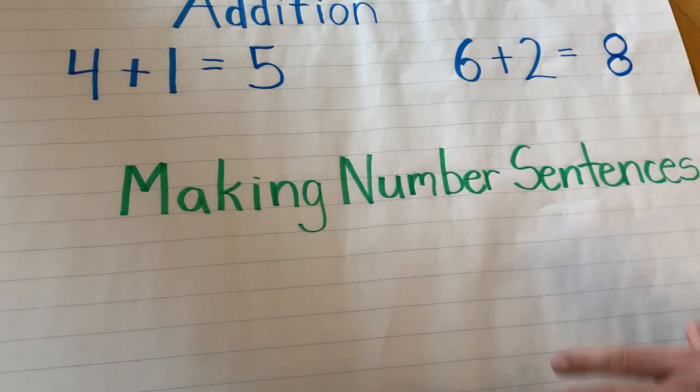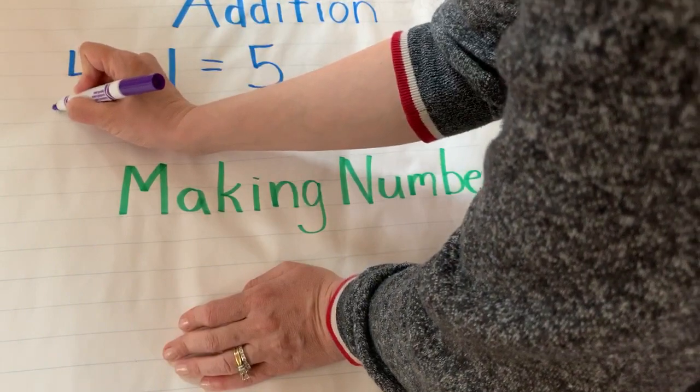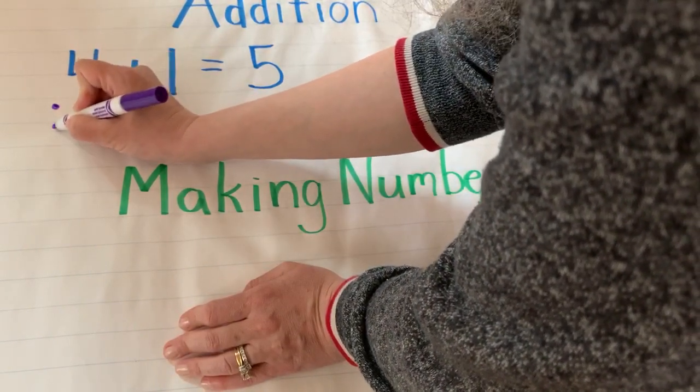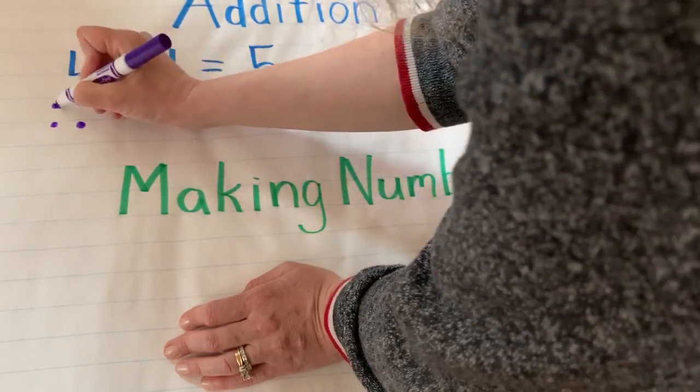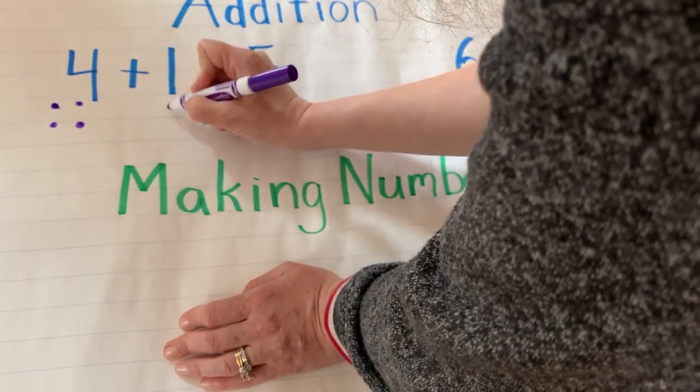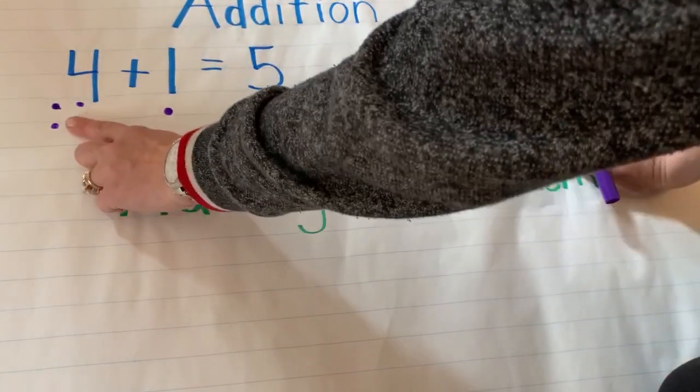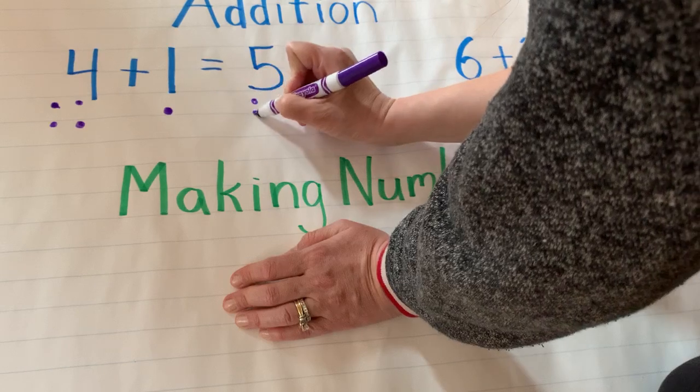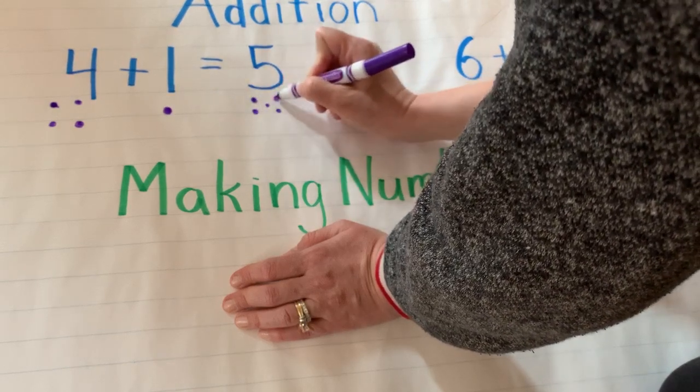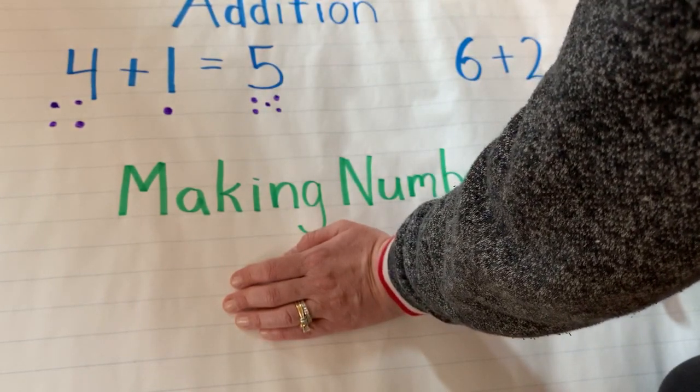For the number 4, I can draw 4 dots. 1, 2, 3, 4. And for the number 1, I can draw 1 dot. So now all together I have 4 plus 1 is 5. And over here, I can draw 5 dots. That's pretty easy.